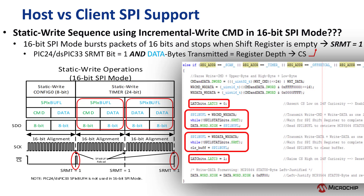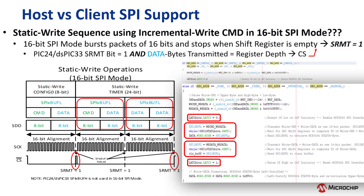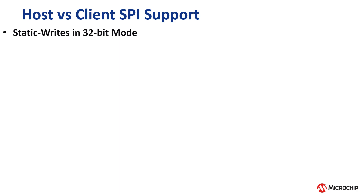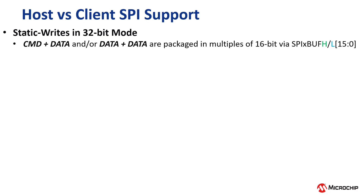Static write operations in 16-bit SPI mode are not all that different from 8-bit SPI mode, the only difference being the number of bits transmitted by the SPI-Buff L register during each transmission. Finally, let's take a look at static write operations in 32-bit SPI mode. In 32-bit SPI mode, command and data must be transmitted in packets via the SPI-Buff H[15:0] and SPI-Buff L[15:0] bits, with the SPI module transmitting both as if from a single 32-bit hardware shift register — that is, with no delay between the two 16-bit registers. It is this key functionality which can be problematic when attempting to perform static write operations in 32-bit SPI mode.